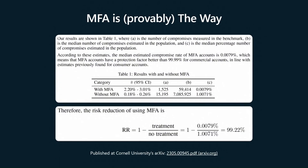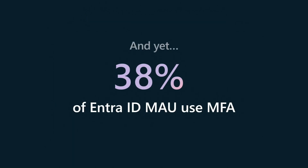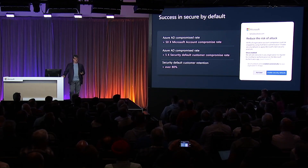Despite the fact that we all know that MFA is the right thing to do, and we have a provable threat reduction from it, only 38% — this is as of today — 38% of our MAO carries an MFA claim anytime in a month. What we recognize is that we can't really keep up with technical and security debt; we have to do more to help people.